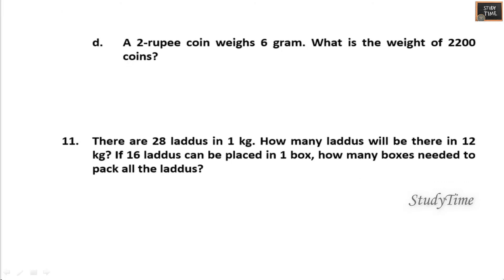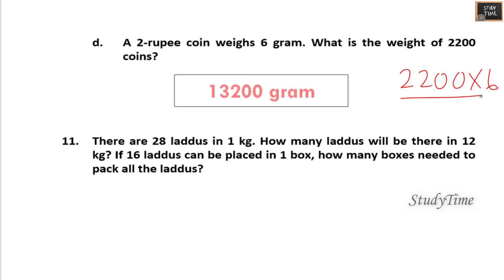A 2-rupee coin weighs 6 grams. What is the weight of 2200 coins? Multiply 2200 into 6. The answer is 13,200 grams.